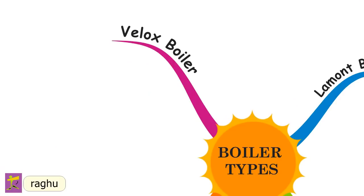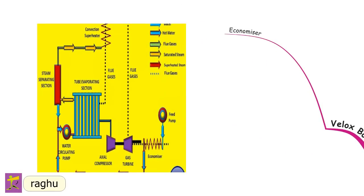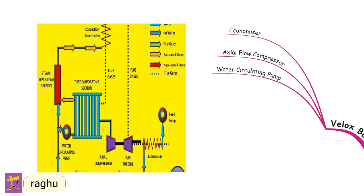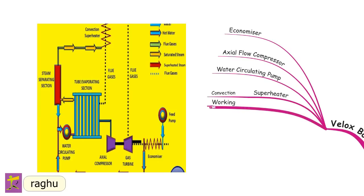The Velox boiler is a forced circulation water tube boiler mostly used with gas turbines. In this boiler, the velocity of flue gases is greater than the velocity of sound, which causes more heat transfer from gas to water and increases the steam generation rate, making it a very important boiler. The economizer preheats water from the feed pump. An axial flow compressor raises air pressure from atmospheric to furnace pressure. A water circulating pump moves water from the economizer to the tube evaporating section. A convection superheater superheats the steam.